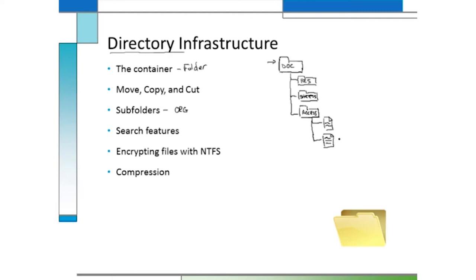Sometimes you might store a file in the wrong folder, or you might decide to reclassify it. The nice thing about the directory infrastructure is the ease with which you can move your data around. Moving means you're taking an actual file and moving it to another folder — removing it from one subfolder and putting it into another. That's different than a copy. A copy leaves the original and makes a copy of that file so you now have two of them in different locations.